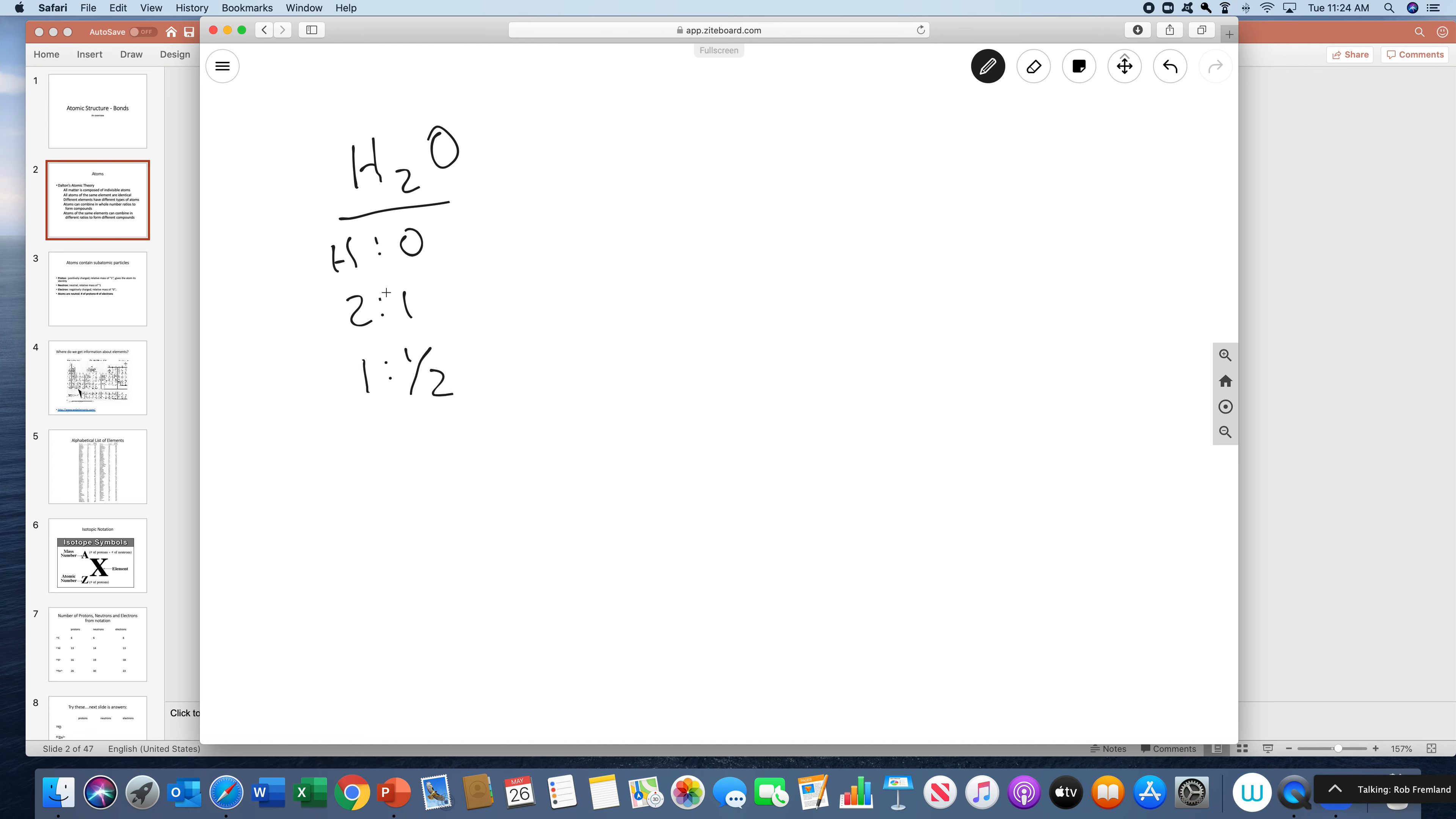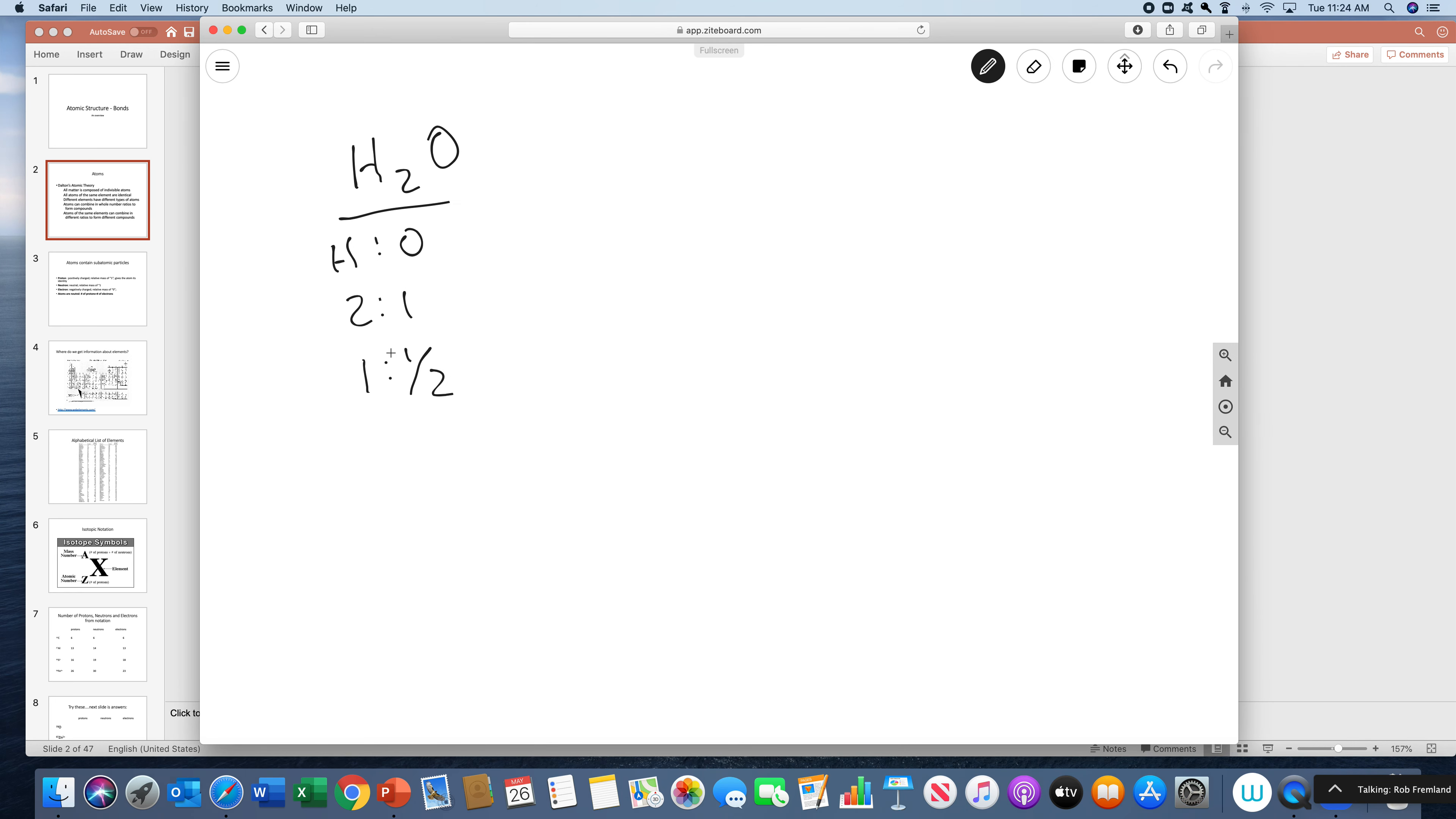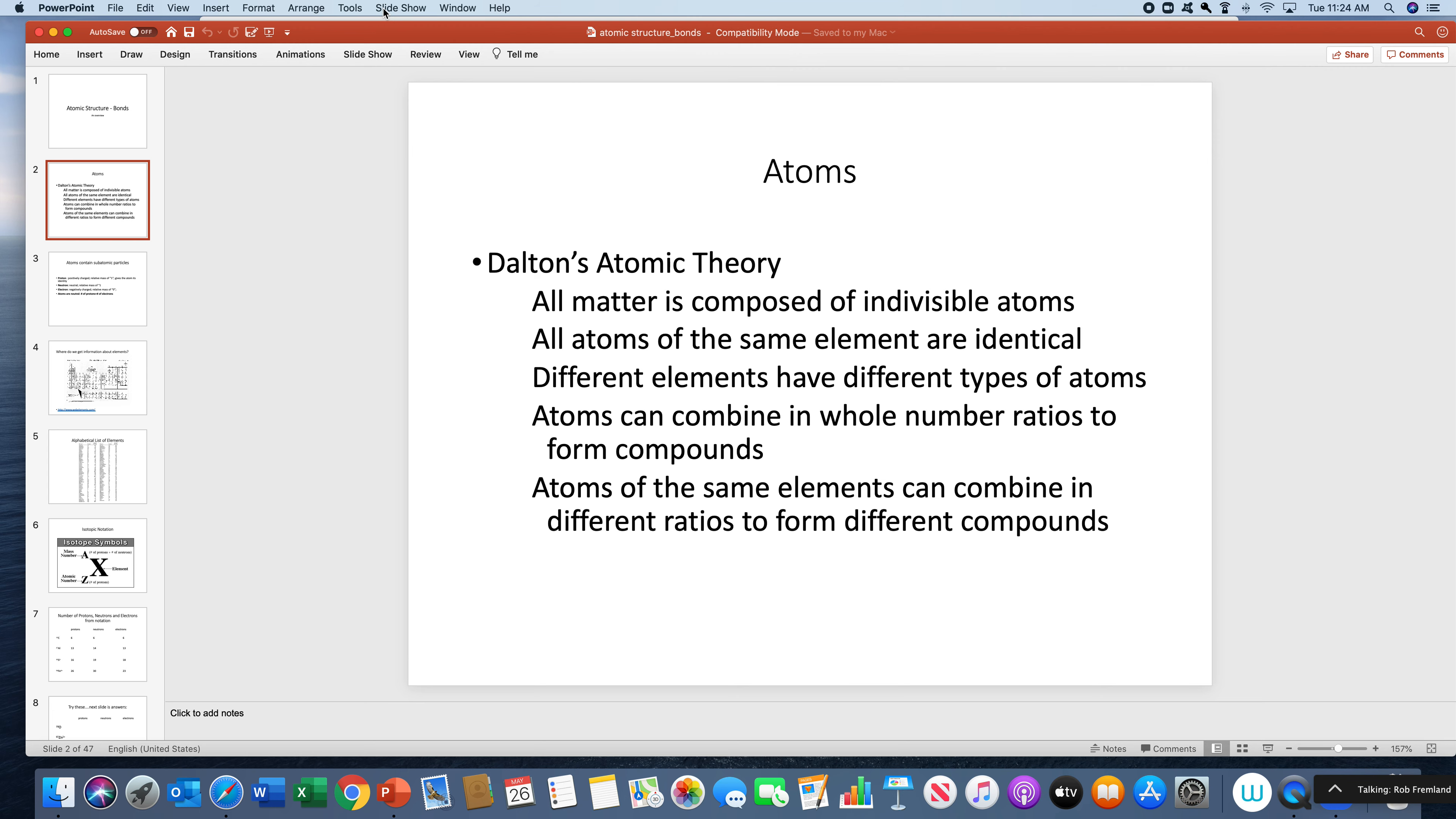But the reason we can't do this is because of that very first piece, where if an atom is indivisible, there's no such thing as a half of an atom. So when they combine, they're going to combine in ratios of 2 to 1. So this one here, this can't happen. There are always whole number ratios because there's no such thing as a half of an atom. It's really that simple.